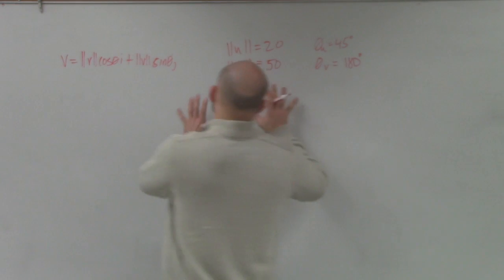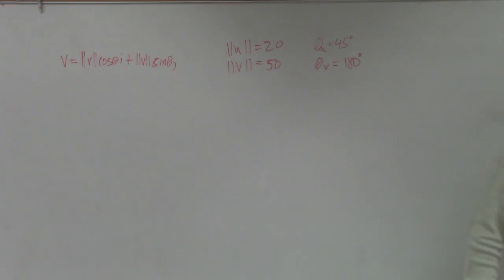So what we're going to want to do is it's asking us in these directions, it says find the component form of the sum of u and v.